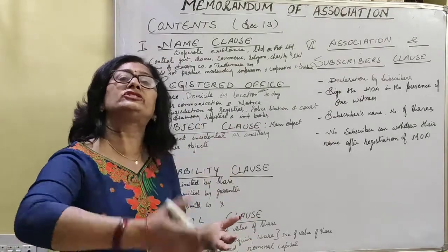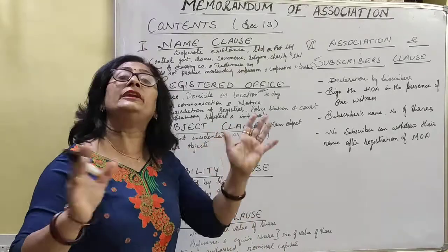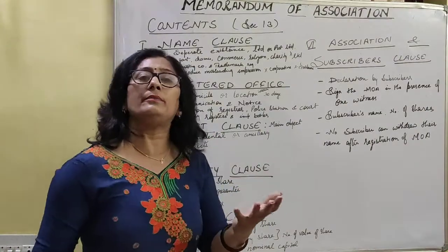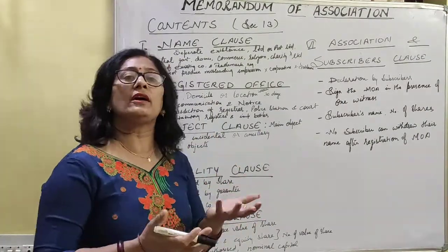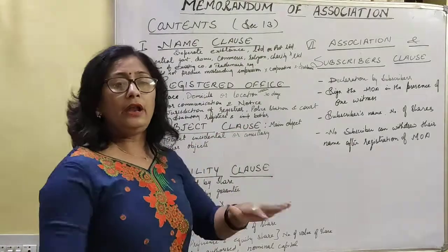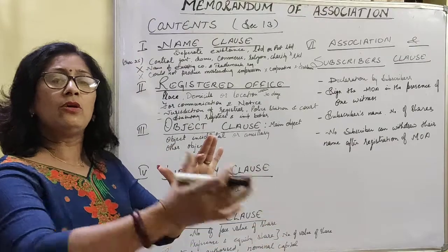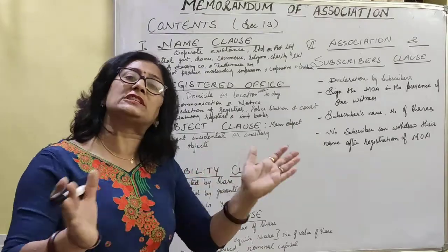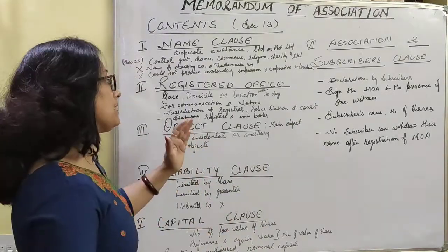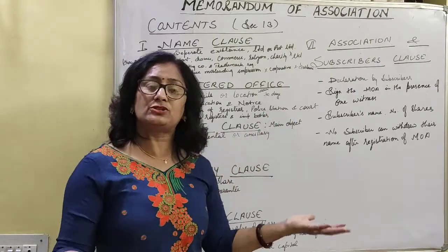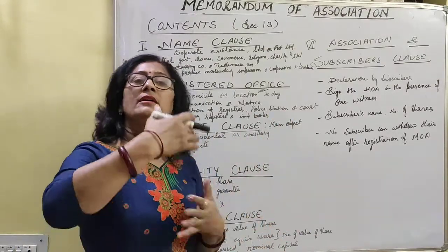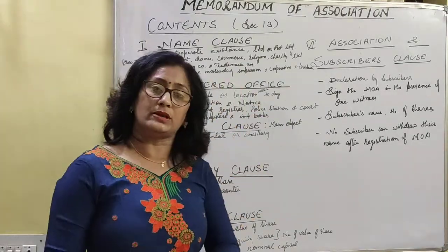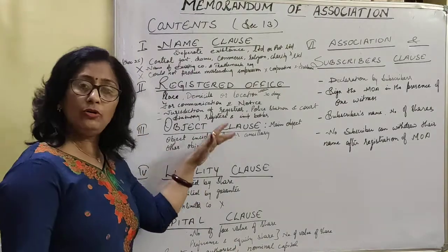Since the memorandum is an unchangeable document, you cannot change it many times. So the broader object clause of a company should be mentioned — the main object, the ancillary object, the alternative object, and other related objects — so there is scope for expansion of the company. The object clause is always written in a broader way so that for 10 to 20 years there is no need to modify it.